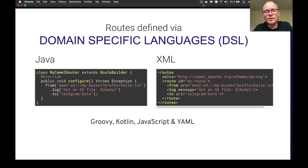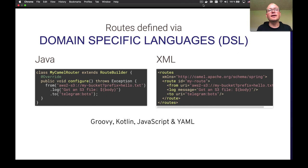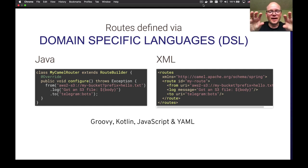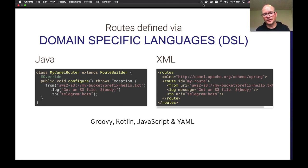In Camel, how you define how systems are integrated is using a Camel route, or Camel routes, and you use code for that. You can use Java code, XML, and Ruby code — Camel is polyglot. The two examples on Java and XML shown here are doing the same thing: taking buckets from Amazon S3 and sending to a Telegram route. Camel executes whether you use Java code or XML as the same bytecode processing at runtime.